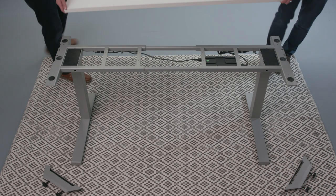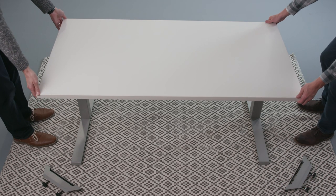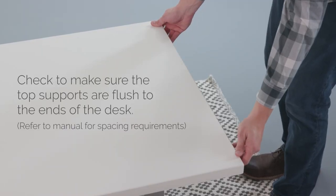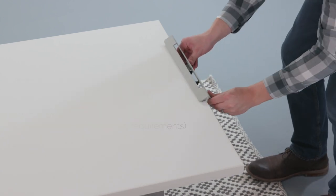Using two people, lift and place the tabletop onto the base. Check that the top supports on each side are flush to both ends of the desk. Refer to your manual for spacing requirements.